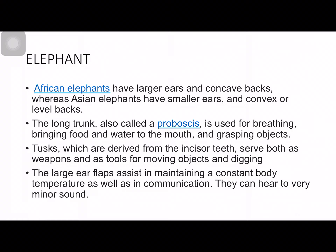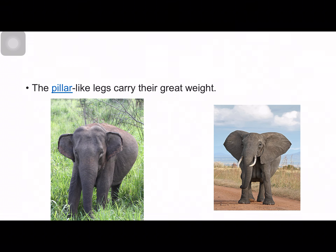Tusks are derived from incisors. The adaptive features of the elephant: they have large ears which they flap to cool themselves down, as they feel very warm. They have pillar-like legs which support their large body weight. Let's confirm which is the African and which is the Indian elephant in the diagram.